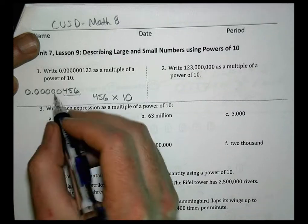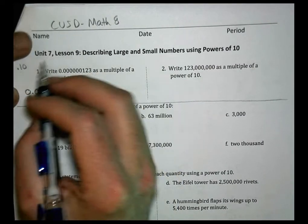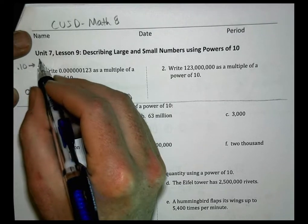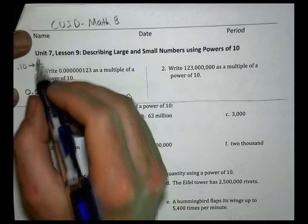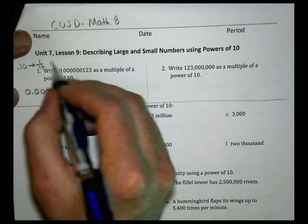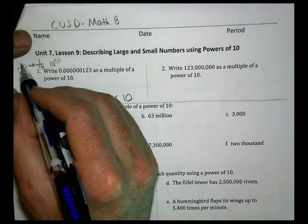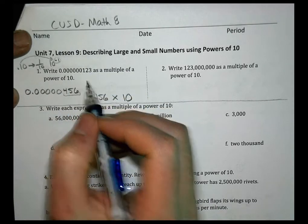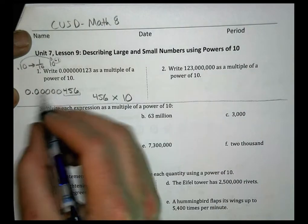If I want to write this as a multiple of power of 10, what we've done in class is take the numbers they provided, in this case 456, and multiply it by a power of 10. Now, because the decimal, think about 1 tenth, 1 tenth is the same as 1 over 10.